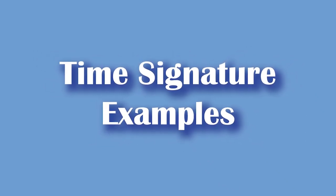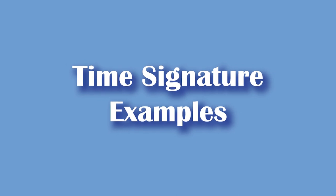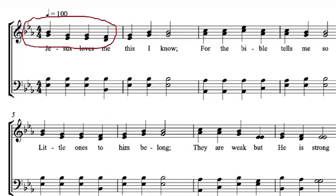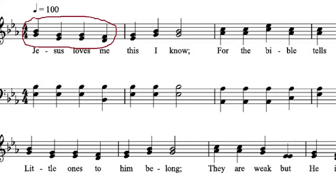Now let's observe this from the examples given. In the first example, the indicated time signature is 4 4. This means the quarter note is one beat and we can find 4 quarter notes in each bar. The 4 quarter notes can be in any combination — such as 4 crotchets, or 2 half notes, or 1 half note and 2 quarter notes, or 1 whole note which is equivalent to 4 quarter notes.